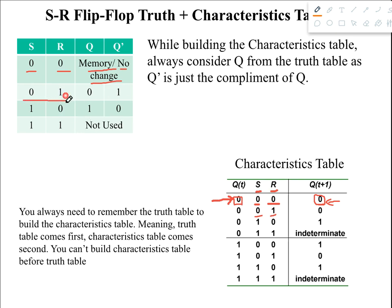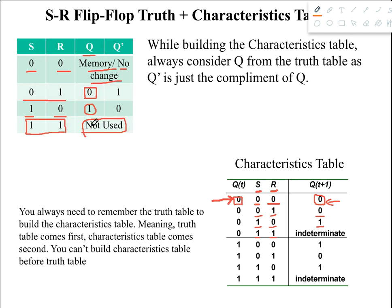For the next value, S equals zero and R equals one, we go back to the truth table and see that the output produced zero for the zero-one combination. Since we get a direct value from the truth table, we can just write that value in the next state — so we write zero. For S equals one and R equals zero, the truth table output produced one, so again we write that same value directly in the next state.